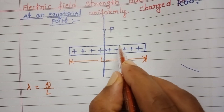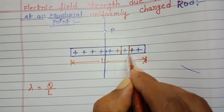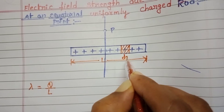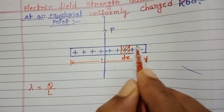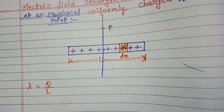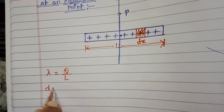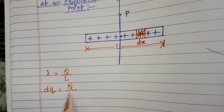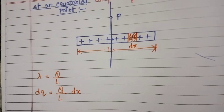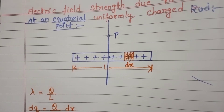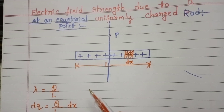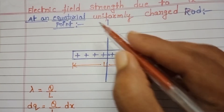That is why we take the smallest element on this rod. The length of this smallest element is dX, and the charge on this smallest element is dQ. So, charge on this element dQ equals charge per unit length into length of that element: dQ = lambda · dX. We want to find the intensity of electric field at point P. Since this is a positive charge, the electric field is directed radially outward.